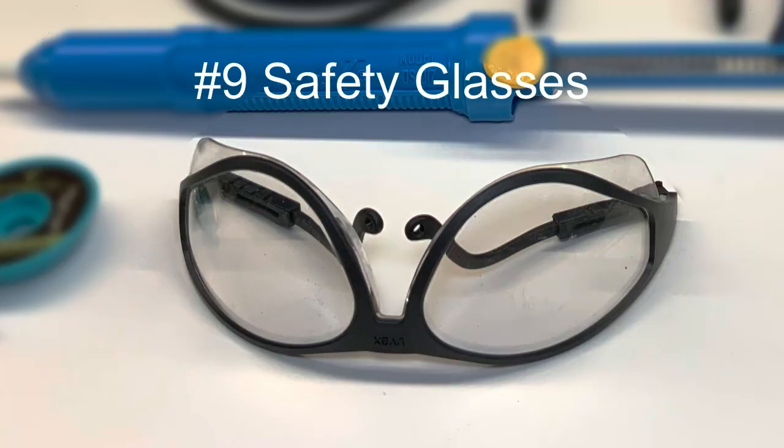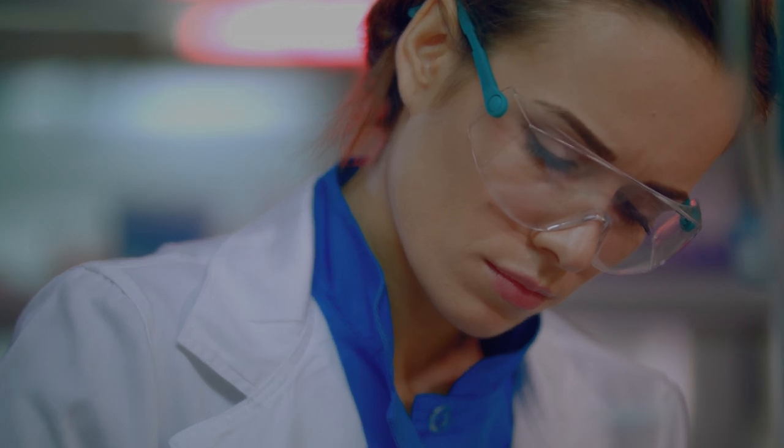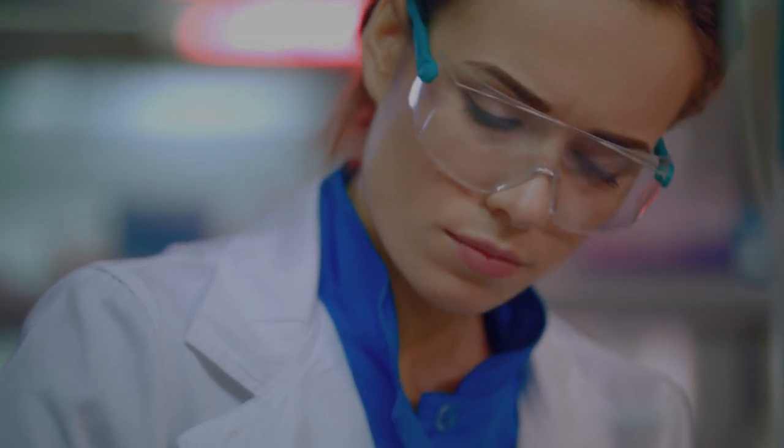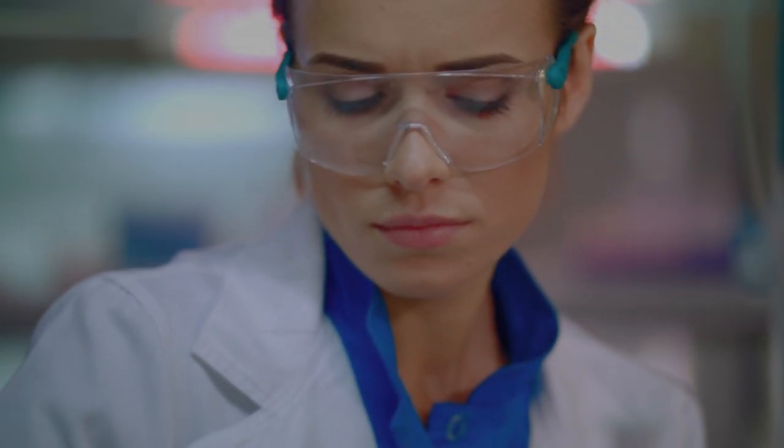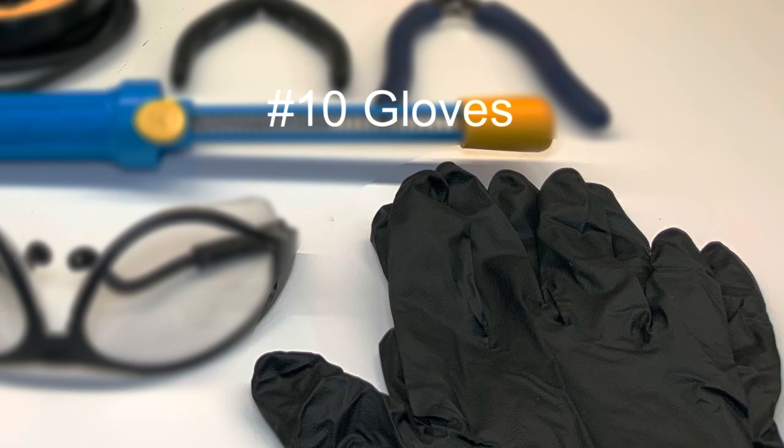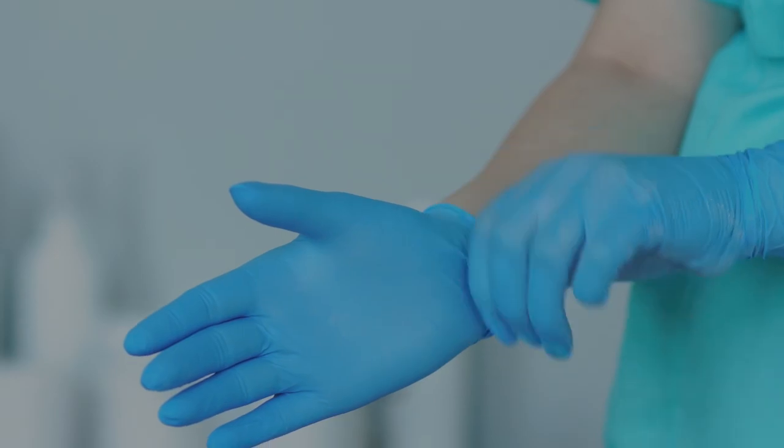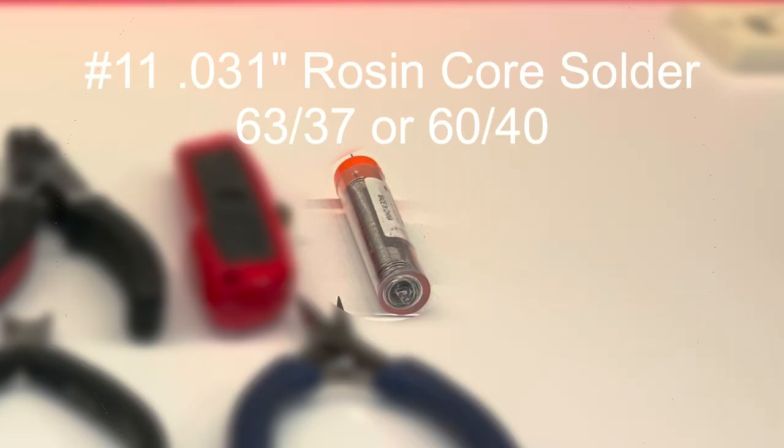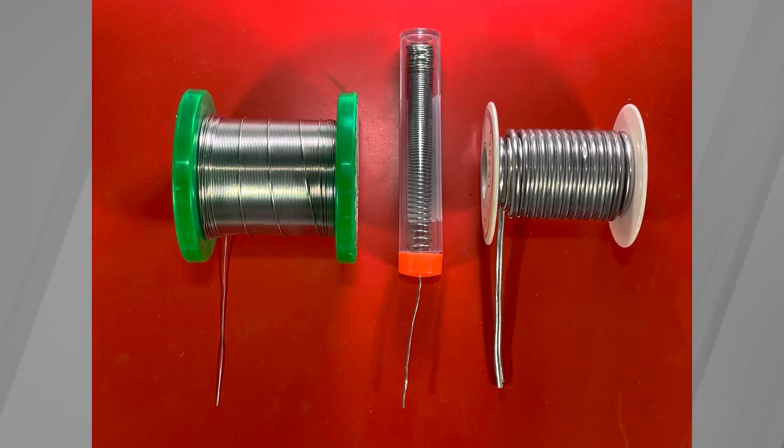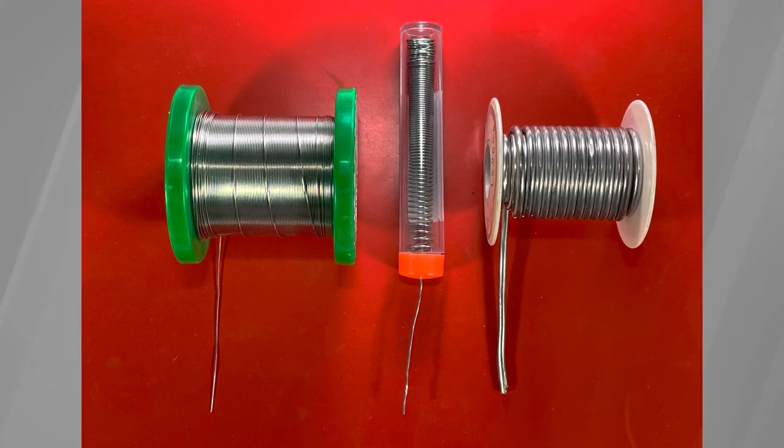Number nine, safety glasses. Needed to protect eyes from solder and when cutting wires and component links. Number ten, gloves. Precautionary measure for handling protection. Number eleven, 31 thousandths of an inch diameter 63-37 or 60-40 rosin core solder. Also available in other sizes and material composition.